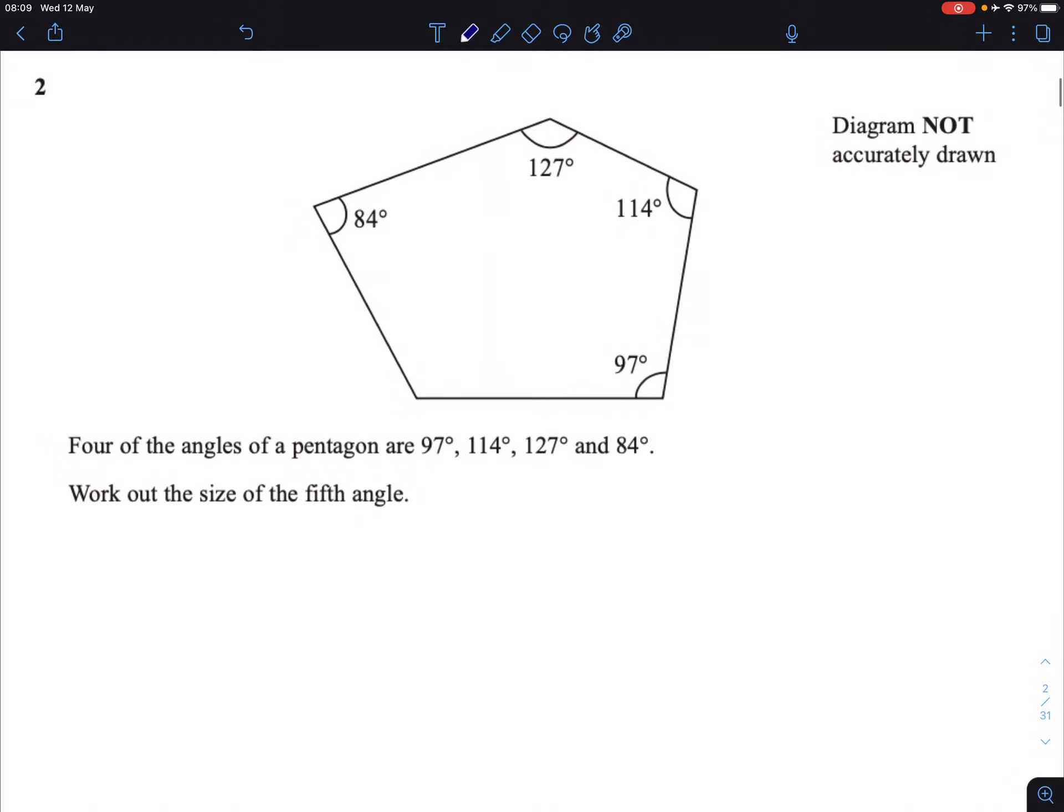Question 2. Four angles of a pentagon are given in the diagram. Work out the size of the fifth angle. That angle there.